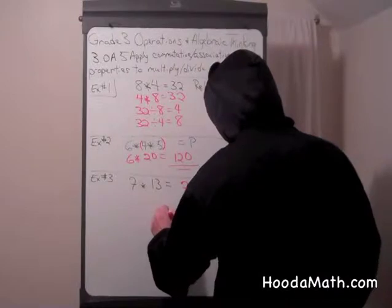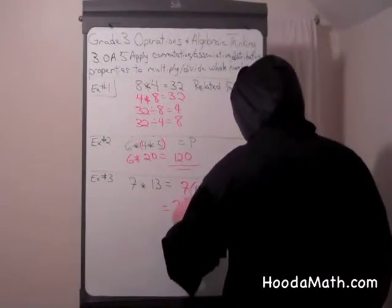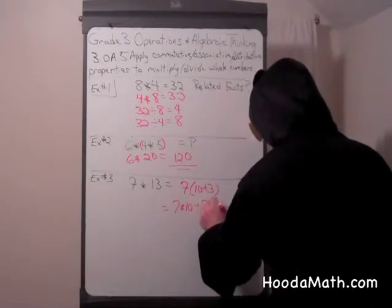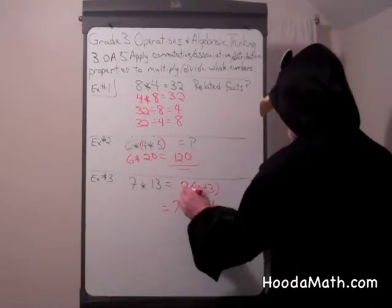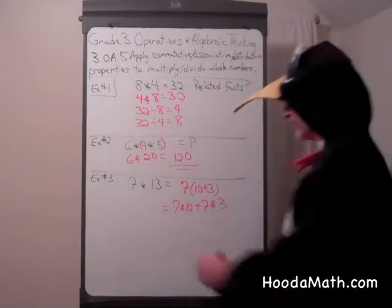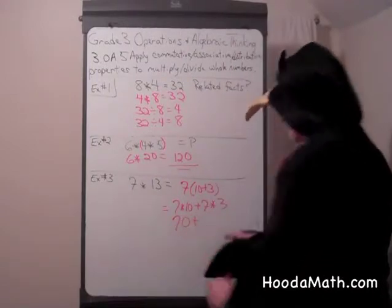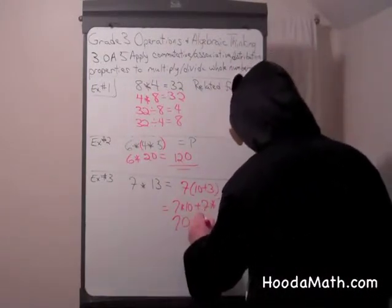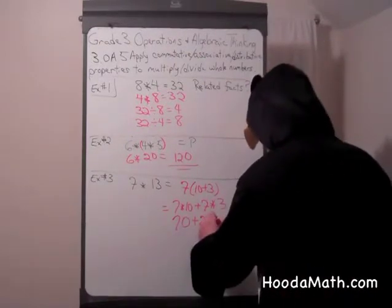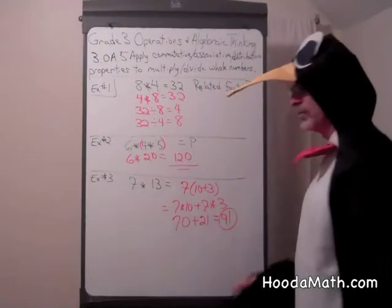And then we can multiply 7 times 10 plus 7 times 3. We're distributing the multiplication over the addition. 7 times 10 is 70 plus 7 times 3 is 21. And then we add 70 plus 21, which gives us 91. That's our product.